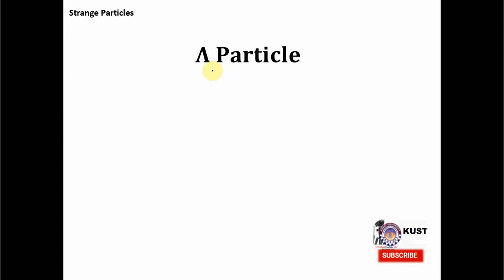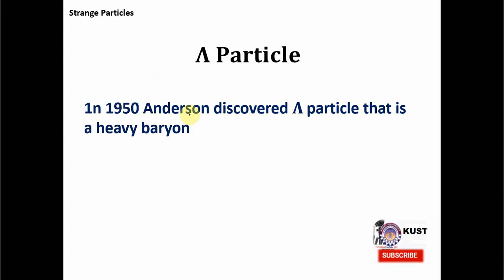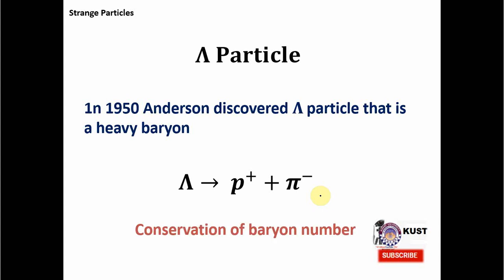The lambda particle was really a strange particle because it decayed in an unusual way. In 1950, Anderson discovered the lambda particle. It did not belong to the mesons family — it was very heavy and belonged to the baryons family, where baryon means a heavy particle. So the lambda was decaying into a proton and a pion. Before going into further details, I want to introduce a law called conservation of baryon number, so we need to understand what baryon number is.